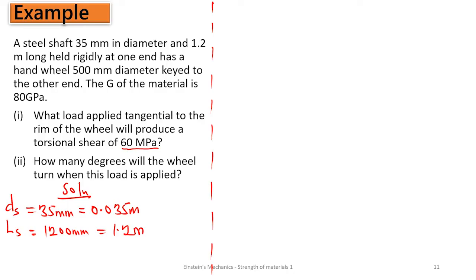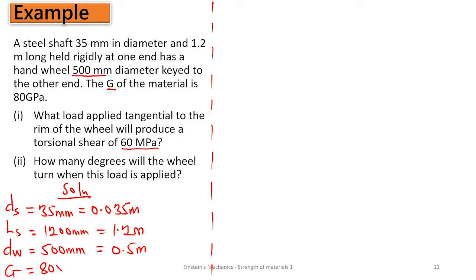We also have the hand wheel of diameter 500 mm keyed to the other end — remember the shaft is fixed at one end and keyed to the hand wheel at the other end. So the diameter of the wheel is 500 mm, which gives us 0.5 m. The shear modulus of the material, G, is 80 gigapascal, which is 80 × 10⁹ Pascal.